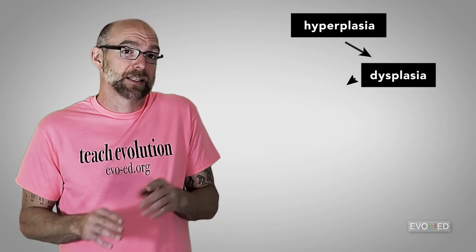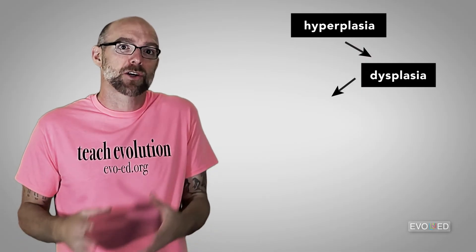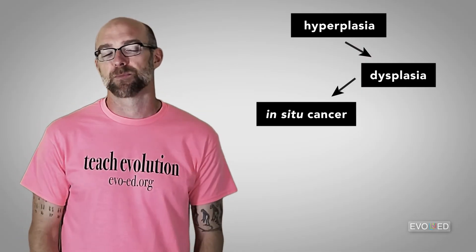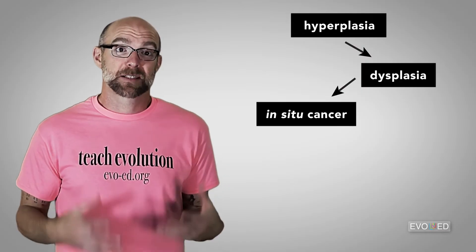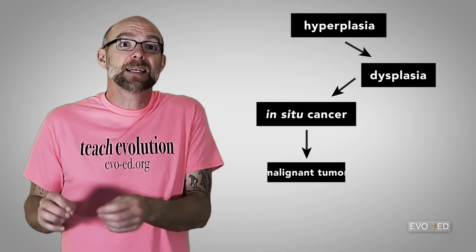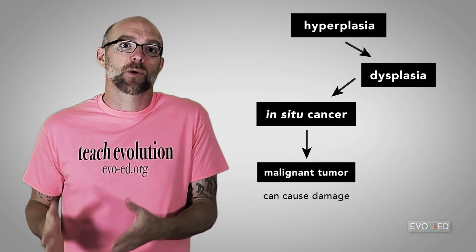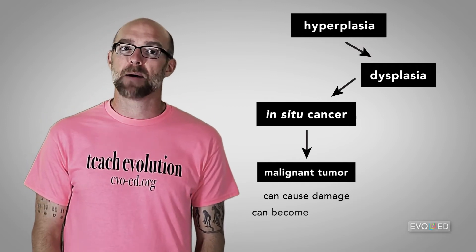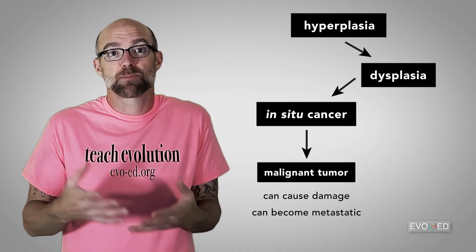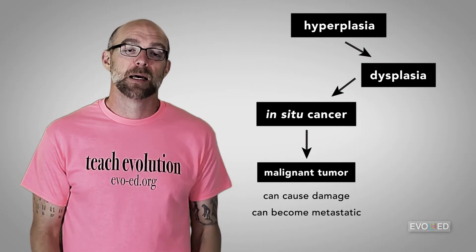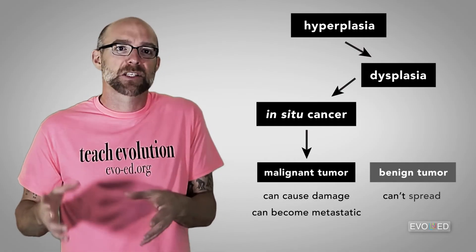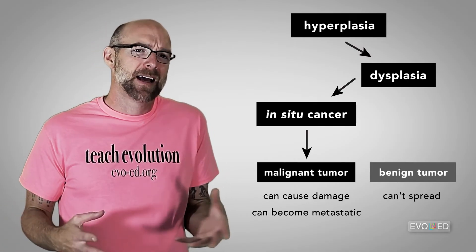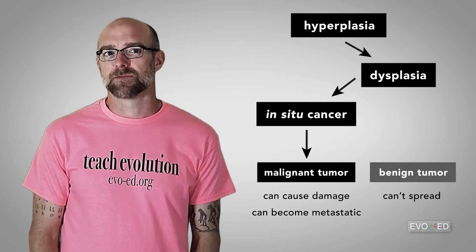If a dysplasia continues to grow, then it can turn into what's called an in-situ cancer, also known as a tumor. At this stage, the tumor may need treatment, particularly if it's malignant. A malignant tumor can damage the organ where it forms and it has the potential to become metastatic, or spread to other parts of the body. A benign tumor isn't really considered cancer — it can't spread to other parts of the body and it generally doesn't harm the organ where it's formed.